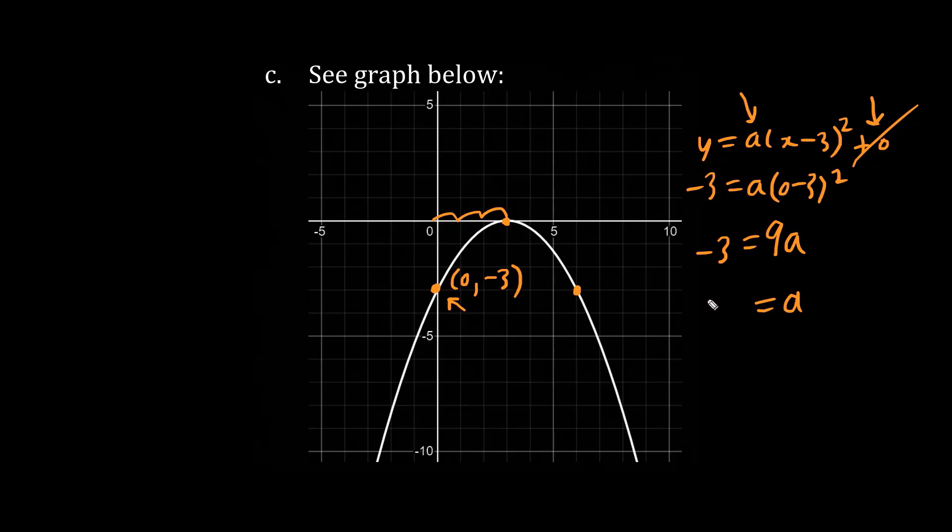Dividing both sides by 9, we have negative 3 over 9, which is negative 1 third. We found the A value. Thus, y equals negative 1 third x minus 3 squared. This is our equation.